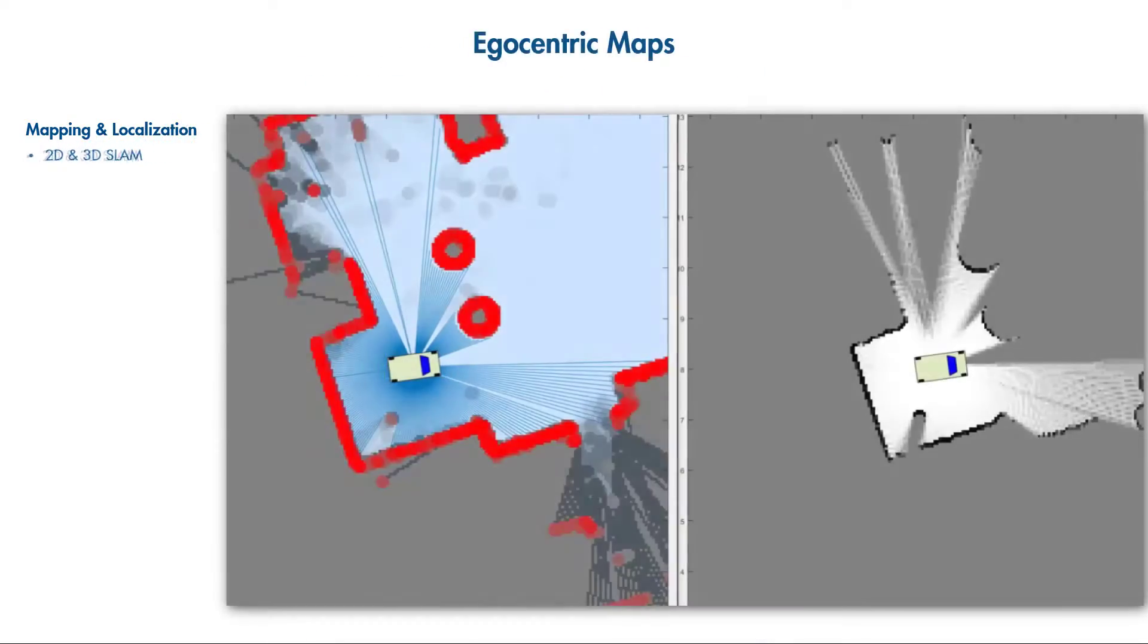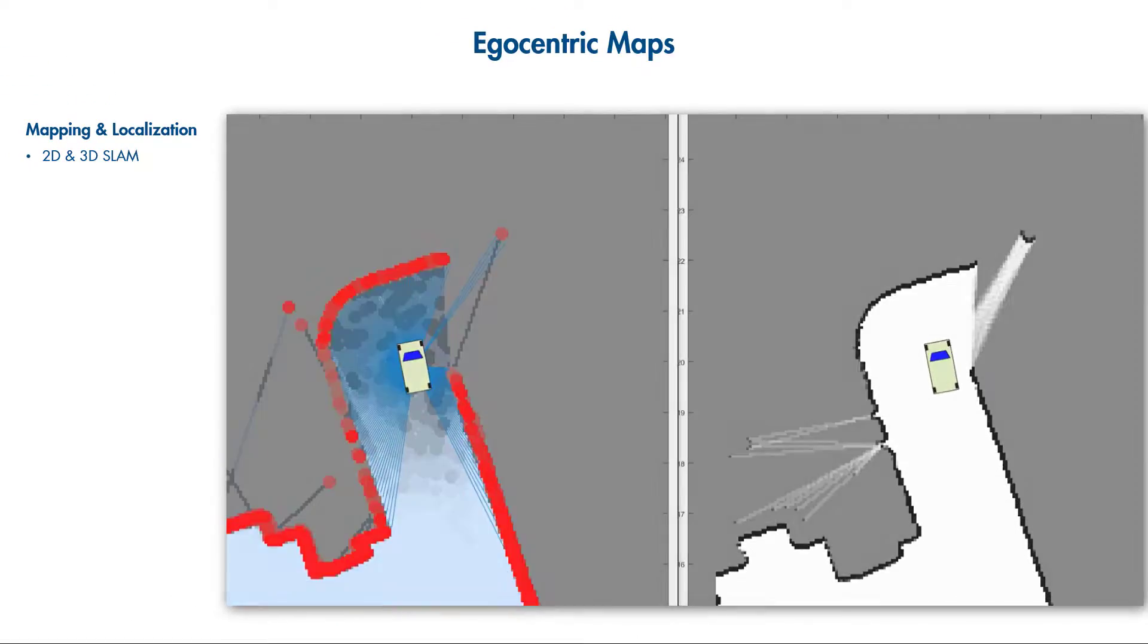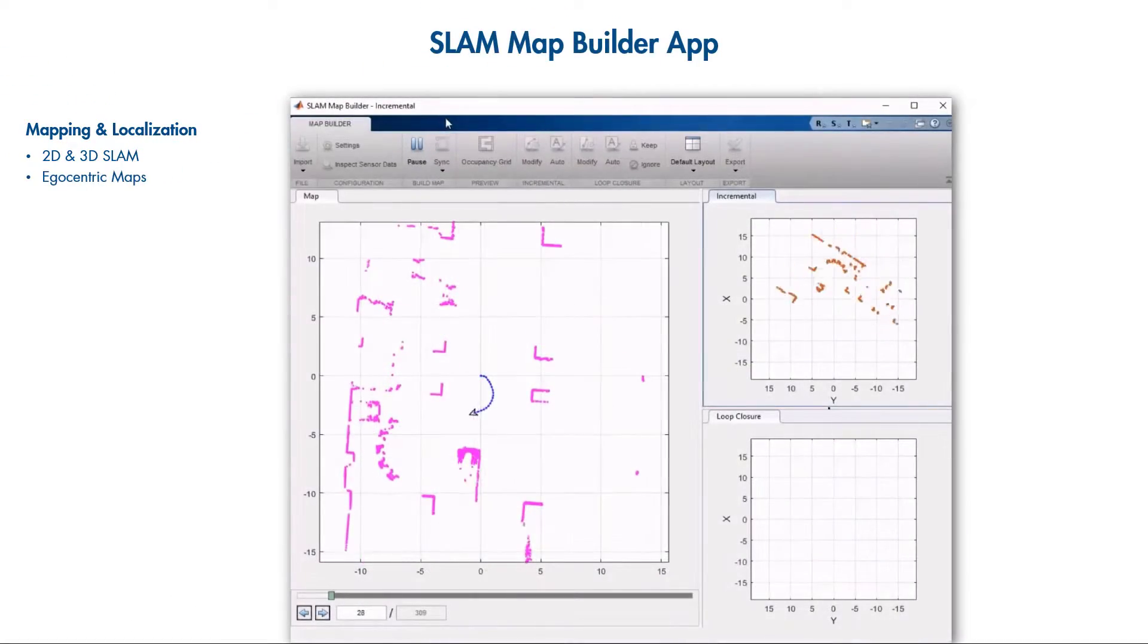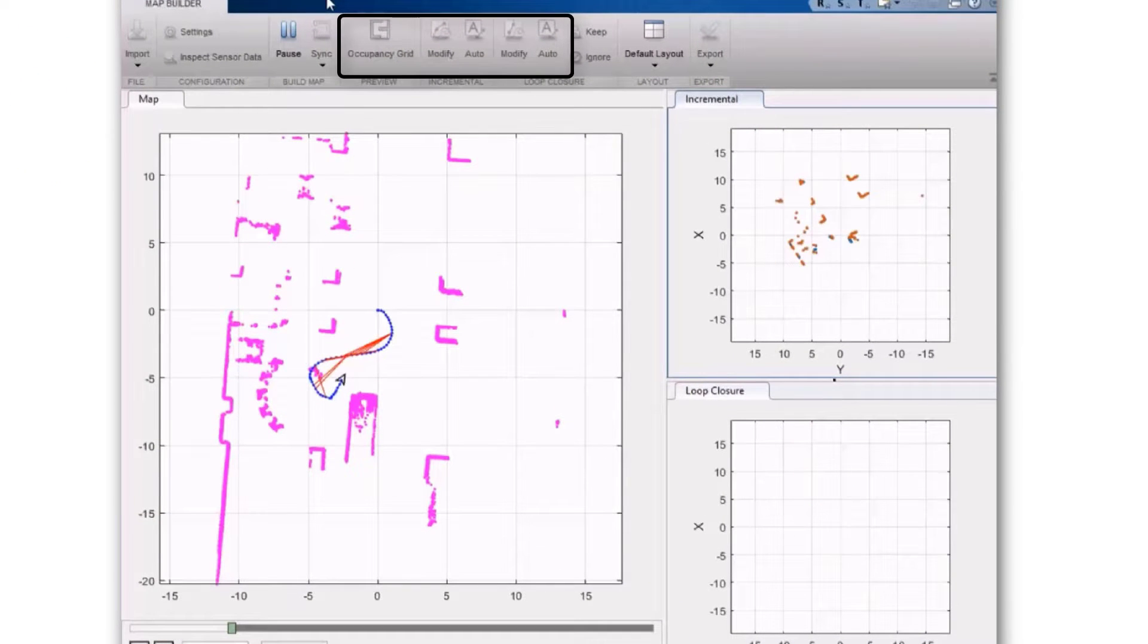You can also generate and visualize local egocentric maps using recorded sensor data. Using the SLAM Map Builder app, you can interactively find and modify loop closures and export the resulting map.